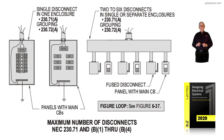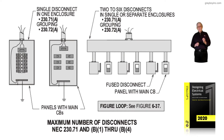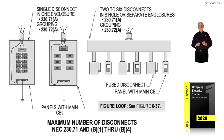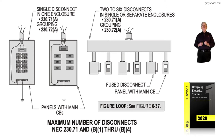This illustration deals with the maximum number of disconnects, and notice this is a new rule in the 2020 NEC. This was not so in the 2017 edition. The maximum number of disconnects at a service by NEC 230.71 is 2 to 6. Notice we have 230.71 B1 through B4 — there's the big change.